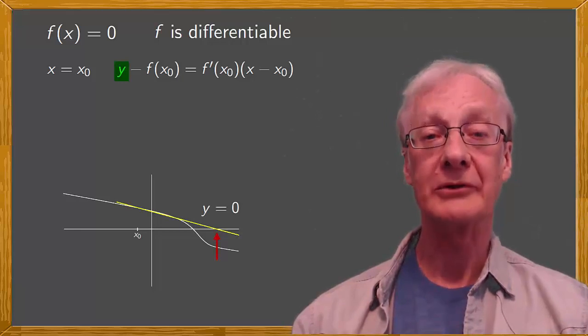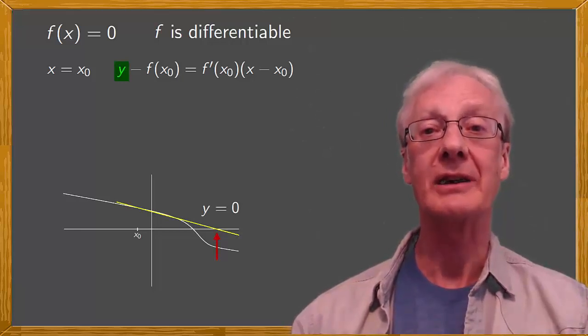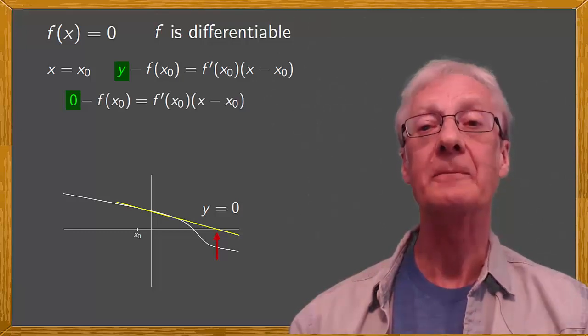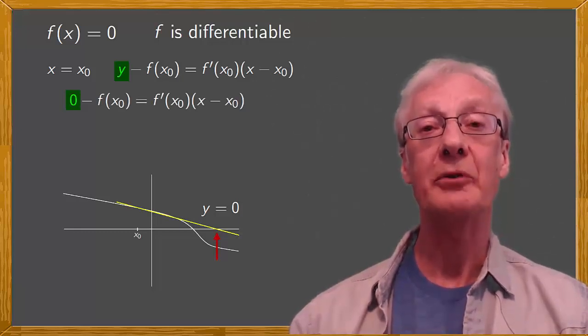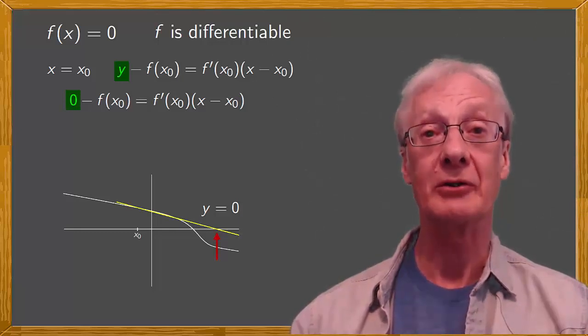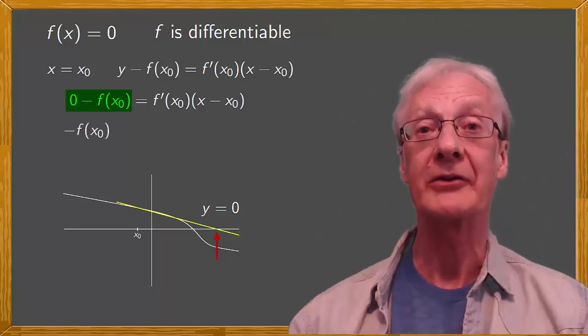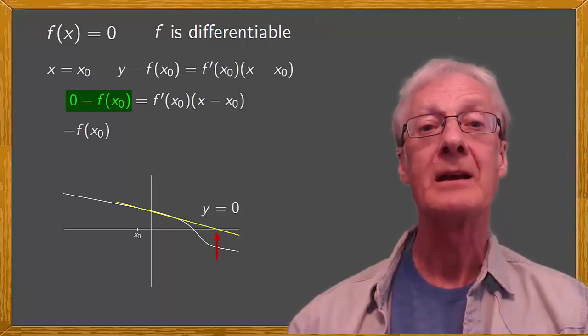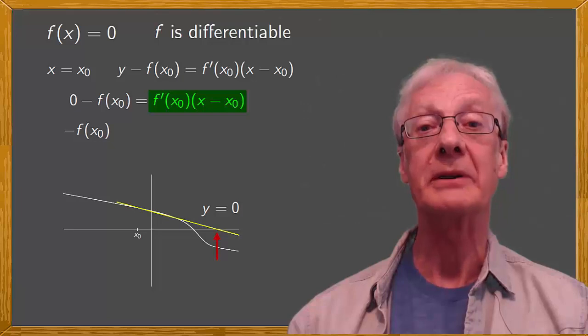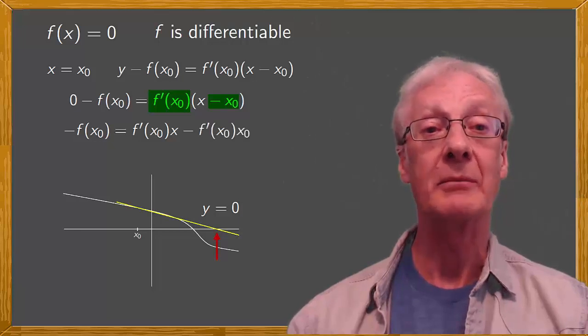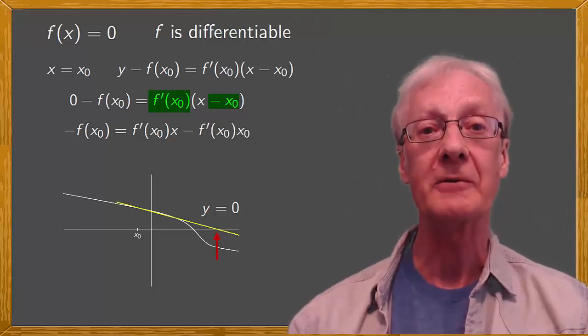Putting y equal to 0 in the equation of the tangent line gives 0 minus f of x0 equals f prime of x0 times x minus x0. Of course, 0 minus f of x0 is just minus f of x0. Then applying the distributive property, this equals f prime of x0 times x minus f prime of x0 times x0.